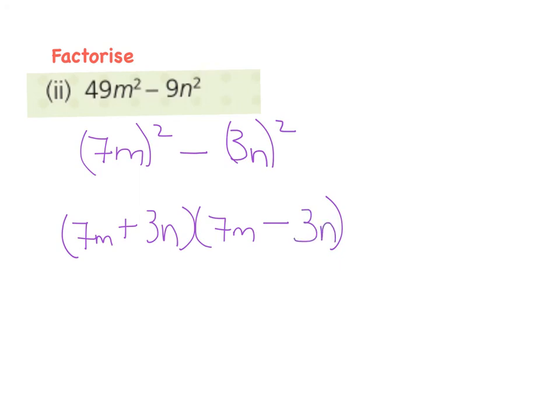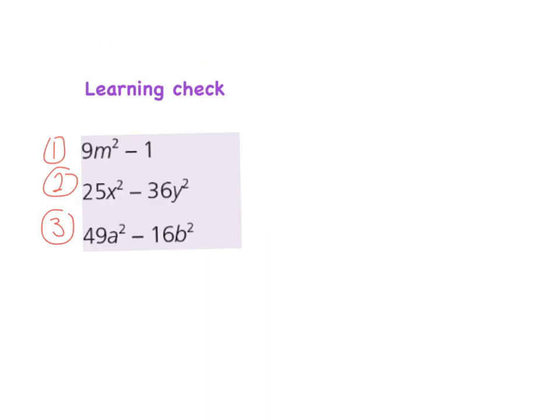We finish the lesson off with a quick learning check. Three sums here: 9m squared minus 1, 25x squared minus 36y squared, 49a squared minus 16b squared. You've spotted the minus, you should have also spotted that each of these are square numbers, and so you're going to follow the rules for factorizing by the method of the difference of two squares.